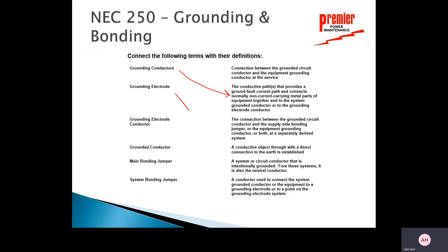The grounding electrode is the way that we establish a path to the earth — the actual connection to the earth. That grounding electrode could be a ground rod, a series of ground rods, or a ground ring around the building. It's the way that we connect directly to the earth.